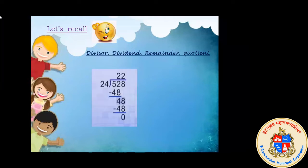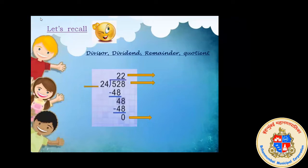Now you will be seeing one division problem on your screen: 528 divided by 24. In this division sum, we have different numbers: 22, 528, 0, and 24. So every number has its own name and its own place. We will see what these numbers are called — you have studied this in earlier standards.